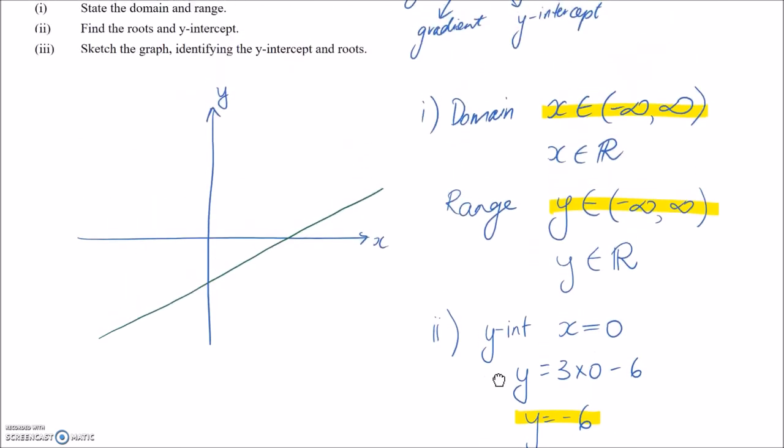All right, so the last part of this question is it wants us to sketch the graph identifying the y intercept and the roots. So that's going to be this here, our sketch. So we've already done the line, we just need to mark in those important points.